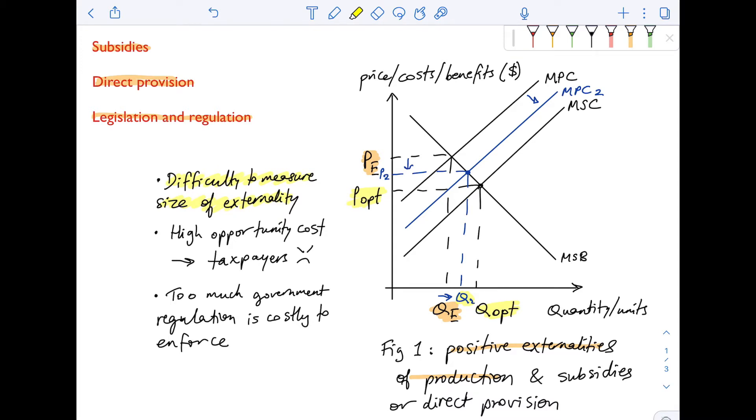Remember those subsidies or direct provision, both of which will shift the MPC curve to the right, come with a very high opportunity cost. The government has to be ready to justify this high cost to the taxpayers because ultimately they are the ones that pay.